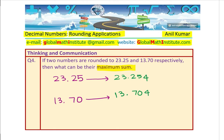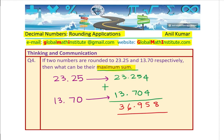Since we want the sum of these two — what can be their maximum sum? Let's add these numbers. When you add decimal numbers, you have to align the decimals and add the positions respectively. So 4 and 4 is 8, 5 plus 0 is 5, 7 plus 2 is 9, 3 and 3 is 6, 2 and 1 is 3. That is the maximum sum you will get when these two numbers, rounded to the 100th place, are added.